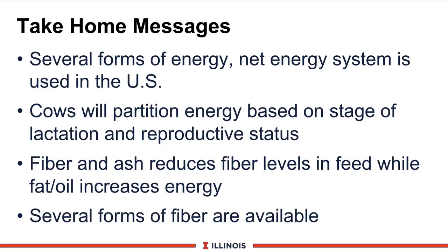To summarize this module: first, understand there are several forms of energy — the net energy system, the TDN system used in the U.S. and around the world, and metabolizable energy used in Europe. Second, cows will partition energy based on various stages of lactation and reproductive status. Third, as fiber and ash go up, the level of energy in a diet goes down; if you buy a product high in fats and oils, you will have more energy and it is worth more commercially. Finally, there are several sources of fiber in the diet with varying amounts of availability.